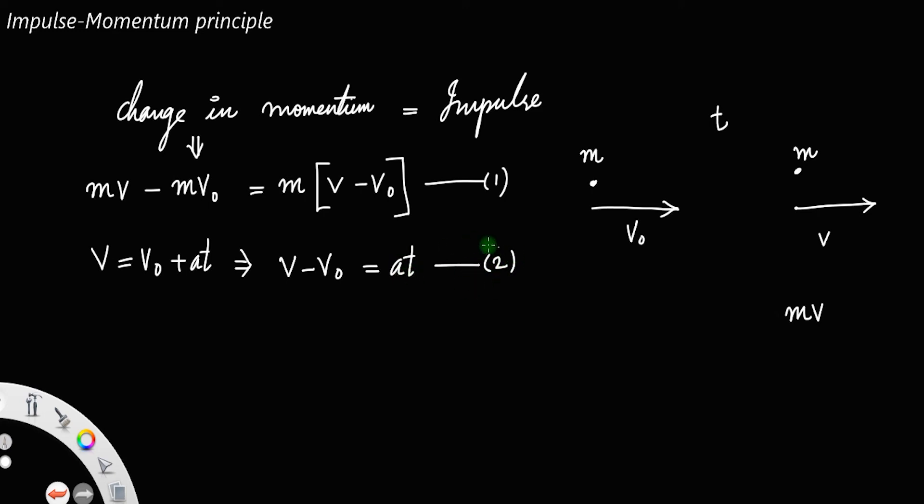If you substitute equation 2 in equation number 1, that is m into, instead of v minus v0, you should substitute at. This will be ma into t.